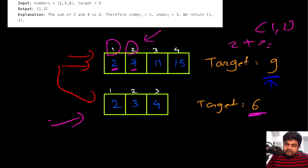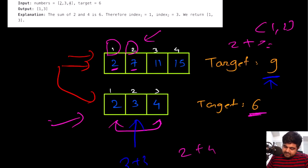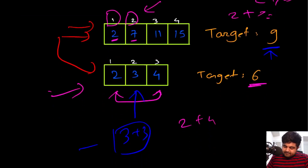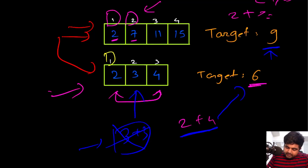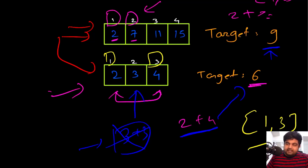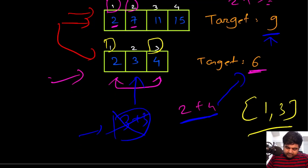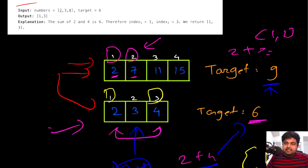In the second example, the target value is six. We can see that six is the sum of two plus four. Note that three plus three also equals six, but we cannot repeat the same element, so the answer has to be two plus four. We return their index values, which are one and three. After understanding the problem statement, let's look at the different approaches to solve this problem.